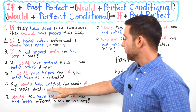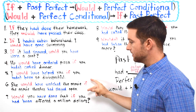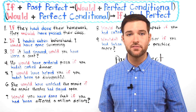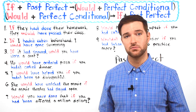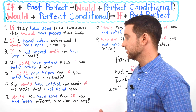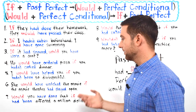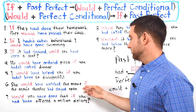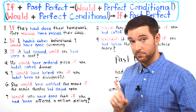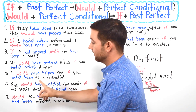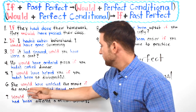Number six: 'She would have watched the movie if the movie theater had stayed open.' This is especially relevant during coronavirus times when everything is shut down — movie theaters are closed, businesses are shut down, people don't have jobs. A new movie comes out, but the movie theater is closed. So if the movie theater had stayed open, she would have watched the movie. Remember, you can also switch it: 'If the movie theater had stayed open, she would have watched the movie.'